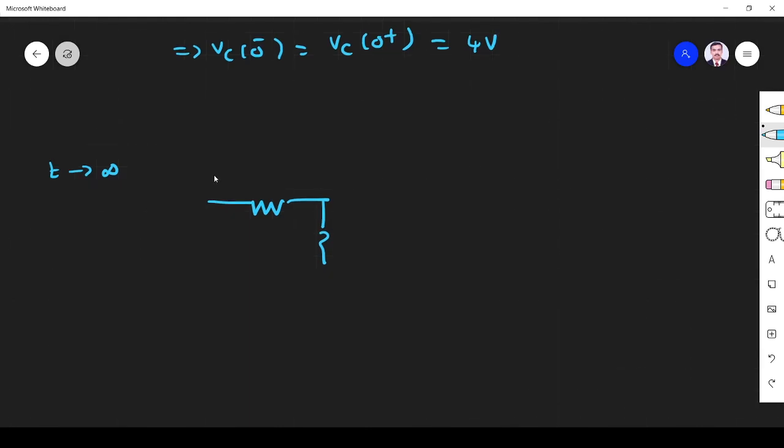Now here it is 4 ohm, here it is 2 ohm. The switch moved to position 2. Now what happens? Here it is 2 ohm. So steady state current, the capacitor is open.